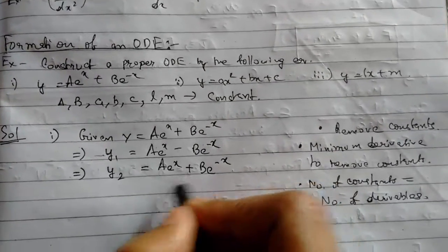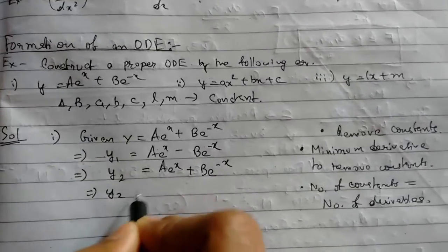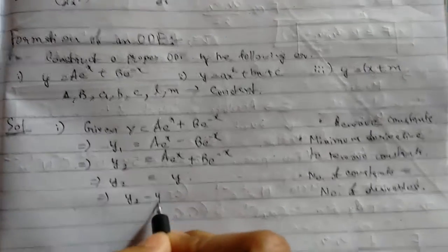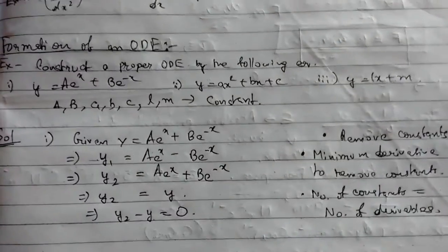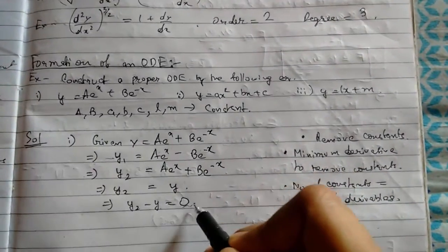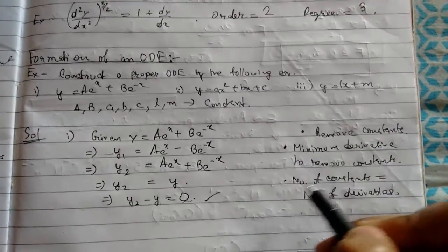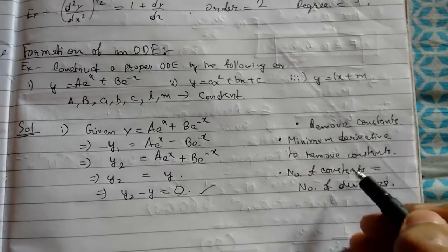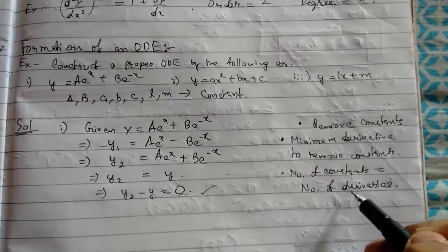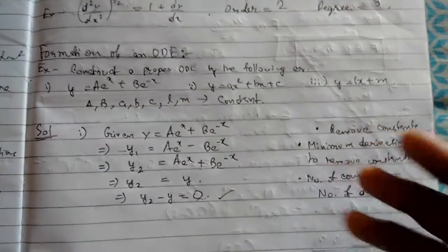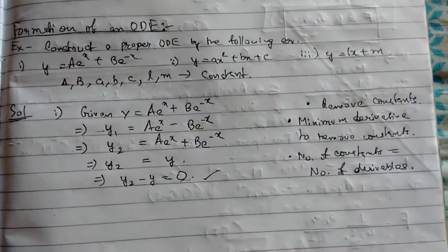So we can write y₂ = y. And arranging this, we see that the final equation is free of constants. Minimum derivative to remove the constants, and number of constants must equal number of derivatives. Two constants and two derivatives. This is the answer to the first.